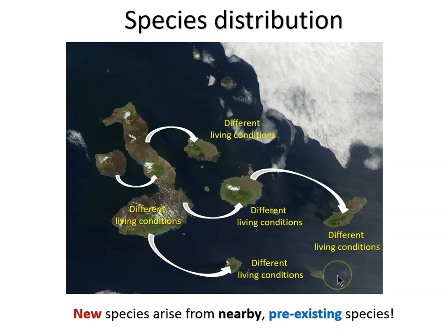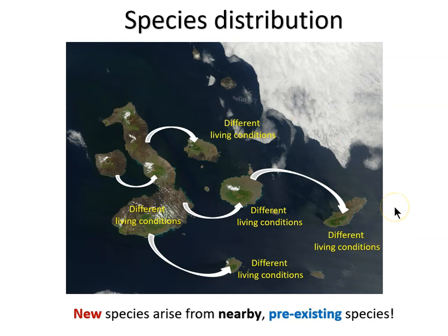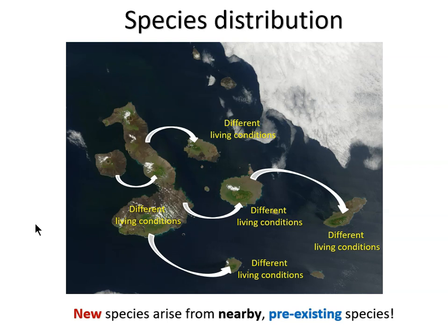Darwin finds this explanation much more satisfying than the traditional Christian view that God simply had reasons for making slightly different species and putting them on these different islands. This is the end of Part 1 of Exhibit B, and we'll take a look at Part 2 in the next lesson.